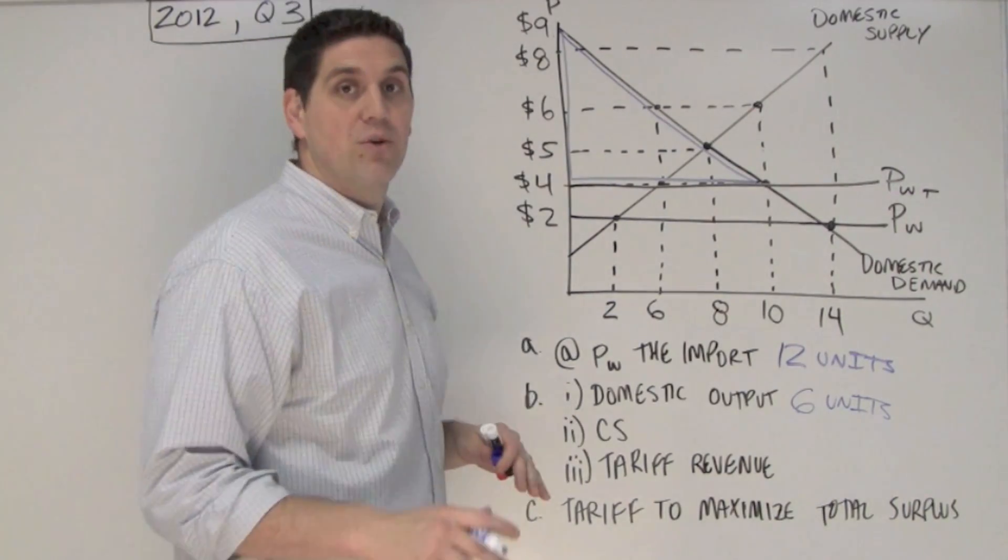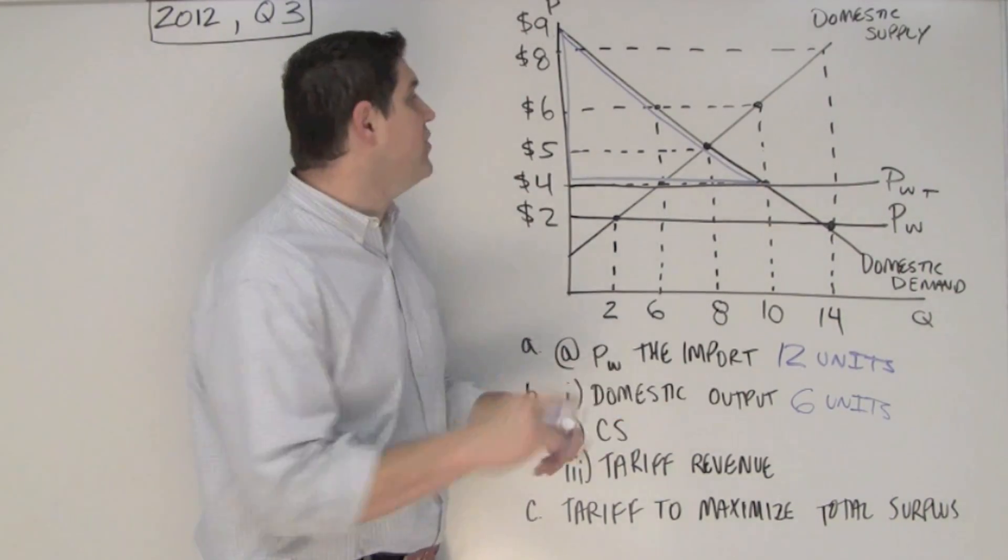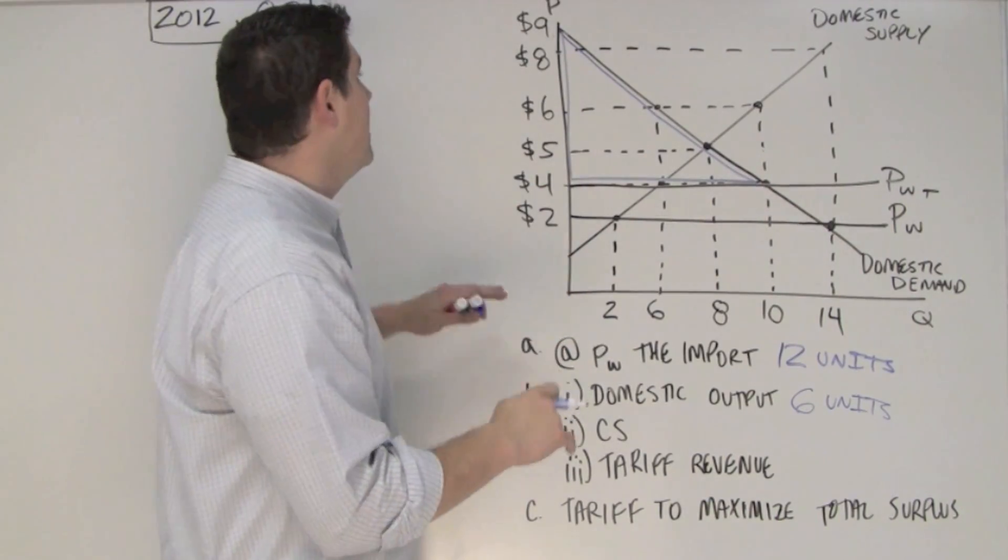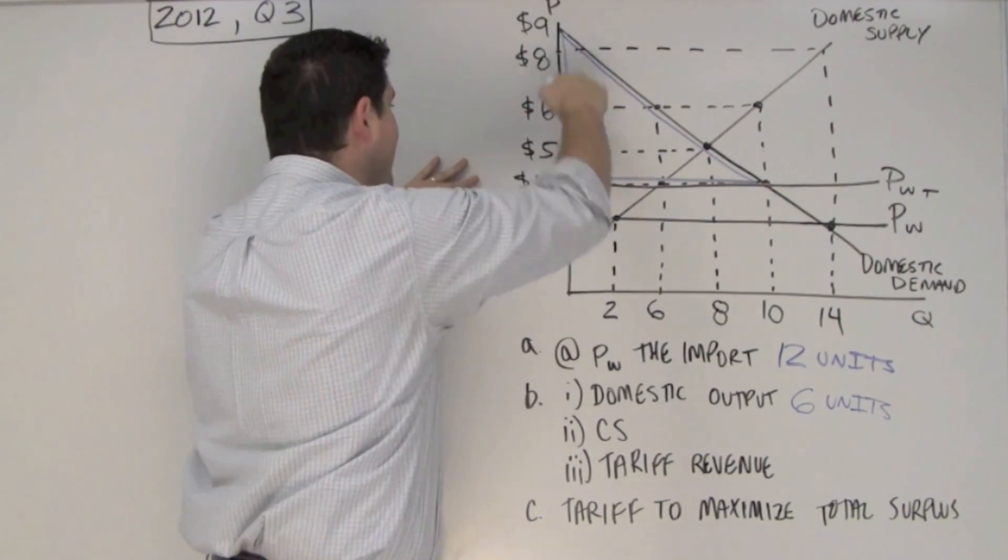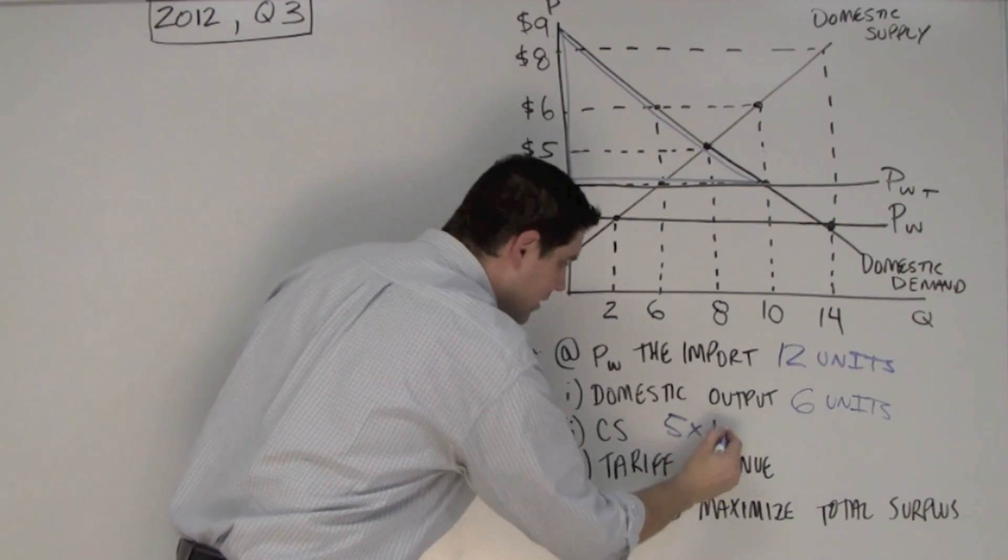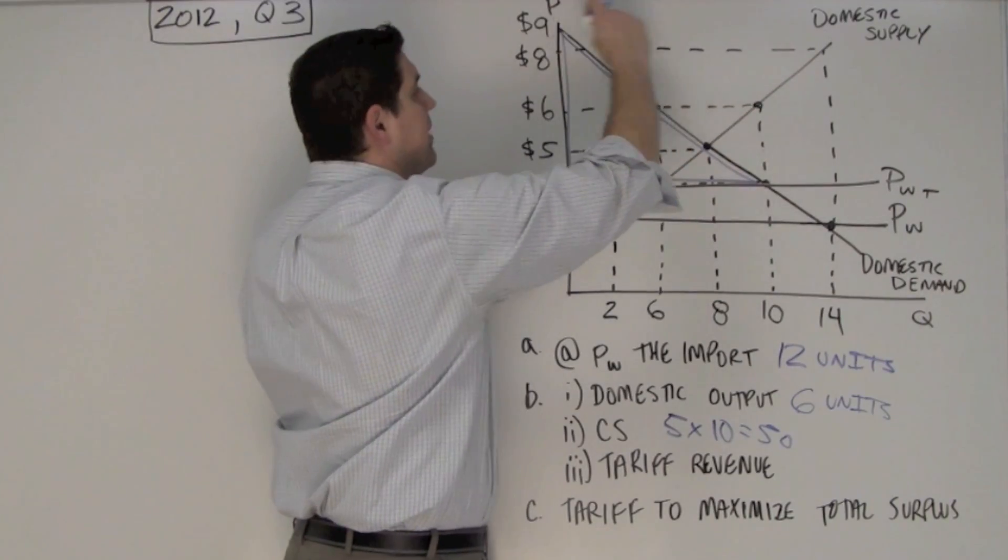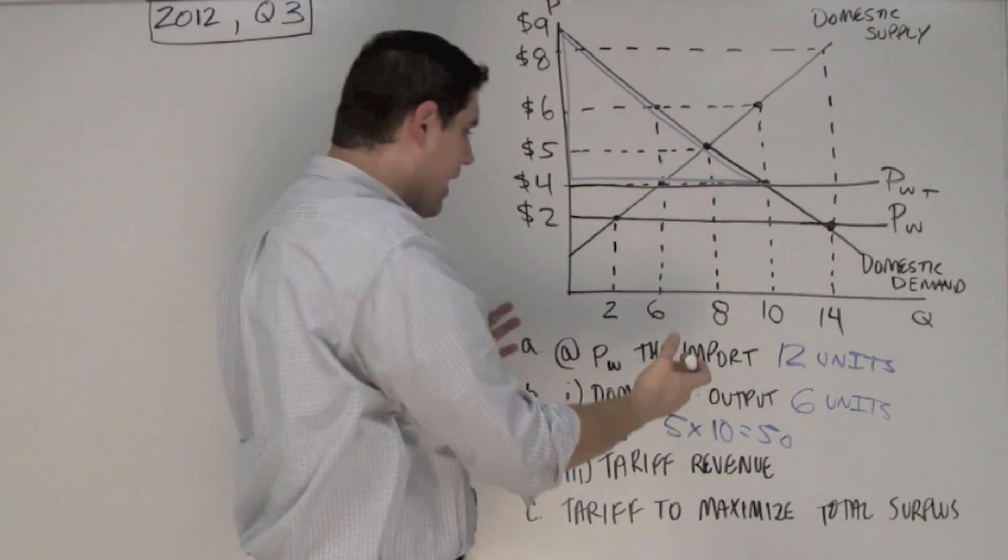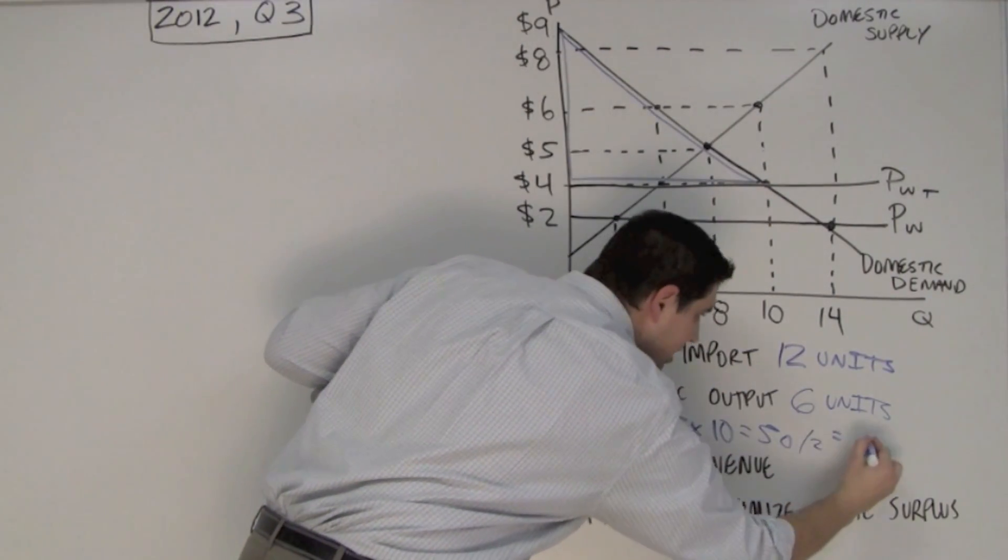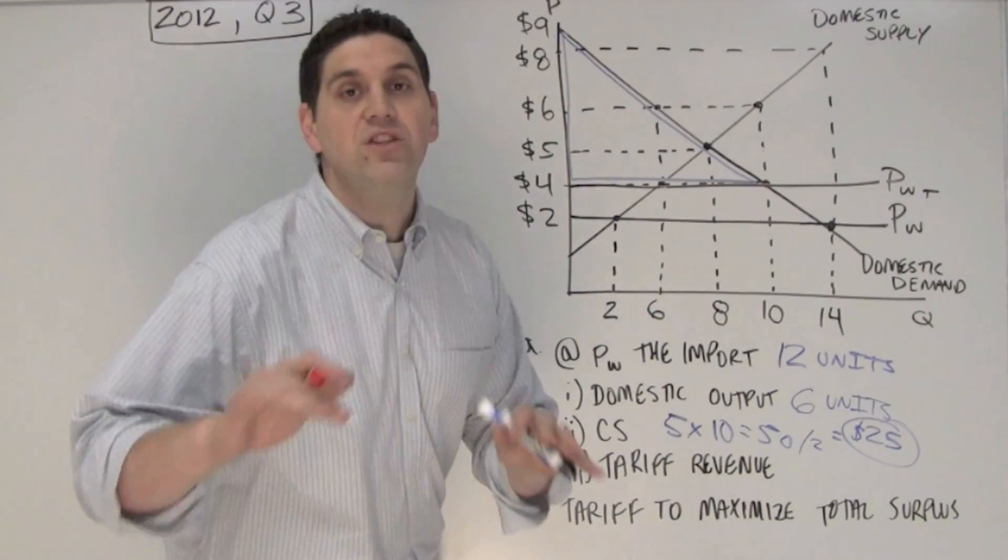Now this question says to calculate the consumer surplus, not just to shade it in. So we actually have to get the number for that area. The area of the triangle is 1 half base times height. And so the height right here is 9 minus 4, so it's 5 times the base, which is 10, and that would give you 50. Now 50 is the area of this big rectangle. You've got to cut it in half to get a triangle. So cut that puppy in half, which you end up with $25 equals the consumer surplus.